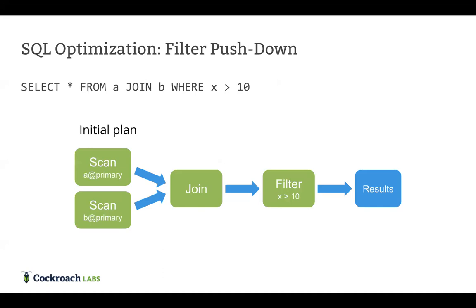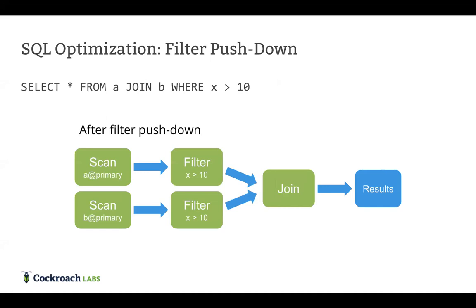One example of a cost-independent transformation is filter push down. Given a query joining two tables with a filter afterward, the initial plan does a scan of both tables, joins them, then filters. Filter push down observes that if the filter can be applied to either side of the join before the join occurs, it should be pushed under the join — because the join's cost depends on the number of input rows, and reducing those rows is always beneficial. This transformation is called filter push down rather than filter push left, because in query tree visualization the root is at the top.